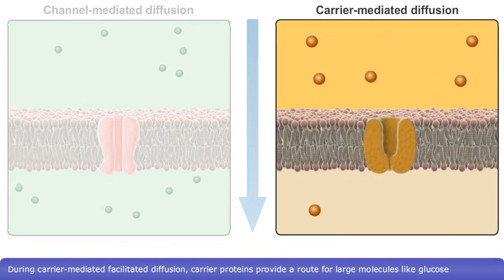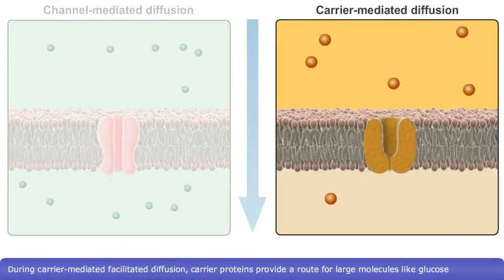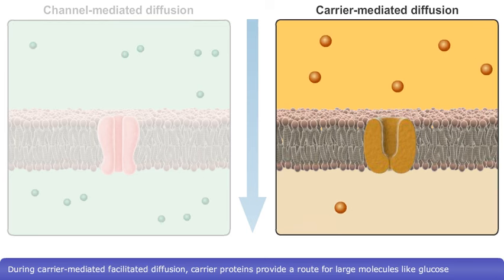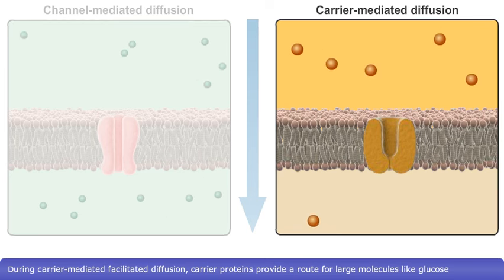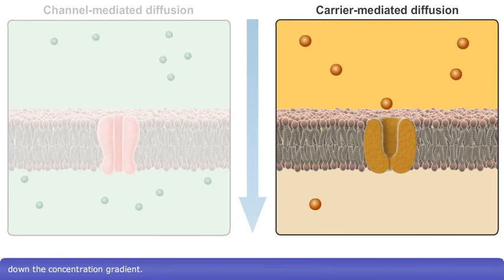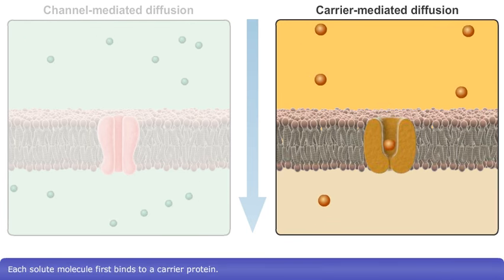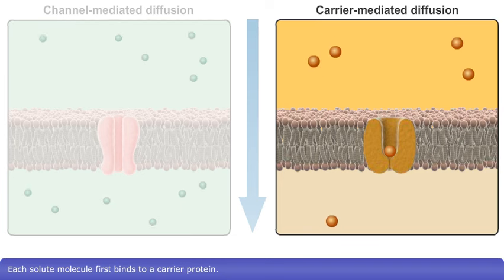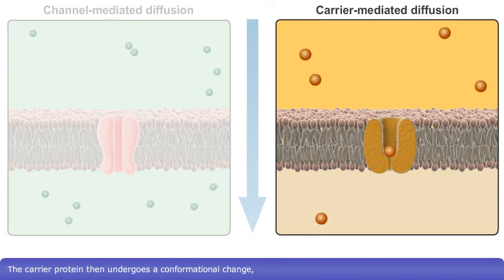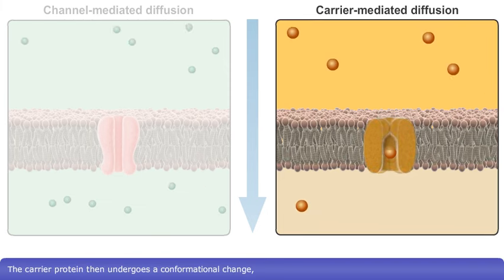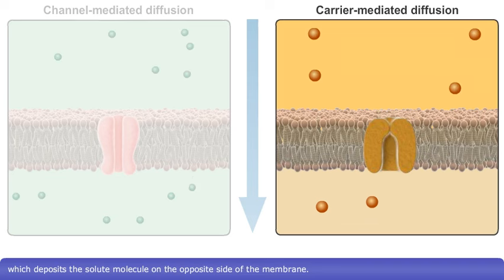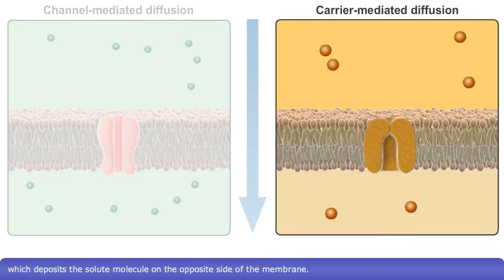During carrier-mediated facilitated diffusion, carrier proteins provide a route for large molecules like glucose to diffuse across the plasma membrane, down their concentration gradient. Each solute molecule first binds to a carrier protein. The carrier protein then undergoes a conformational change, which deposits the solute molecule on the opposite side of the membrane.